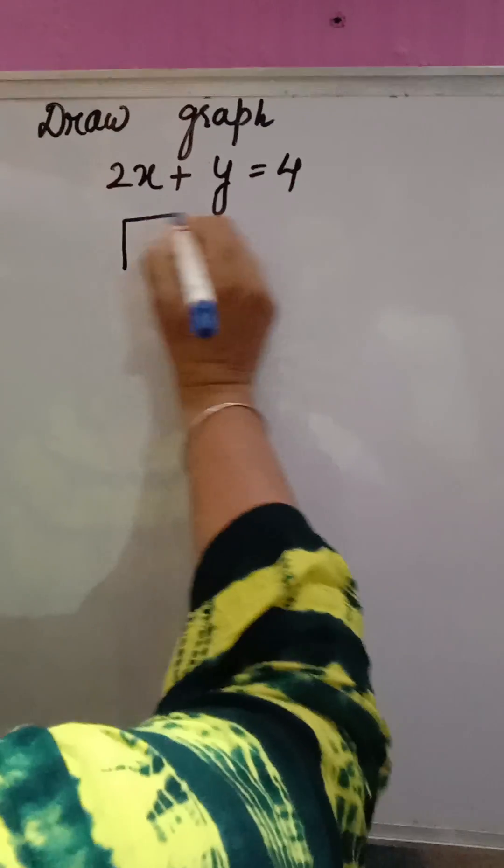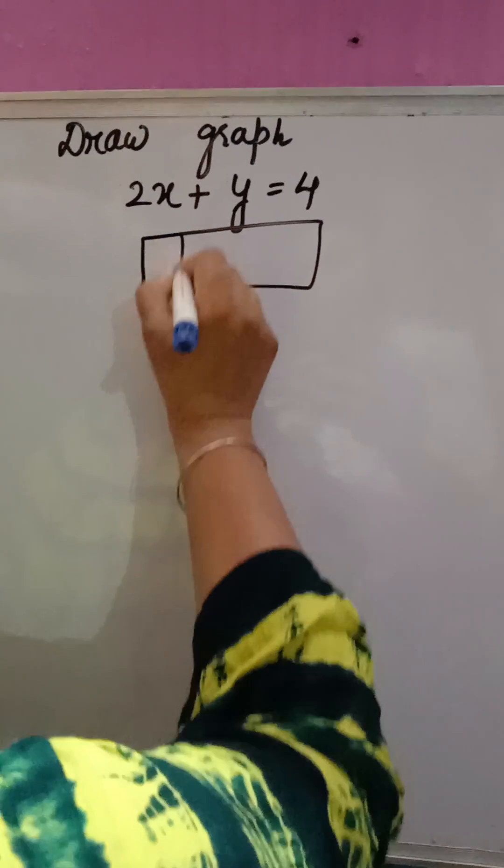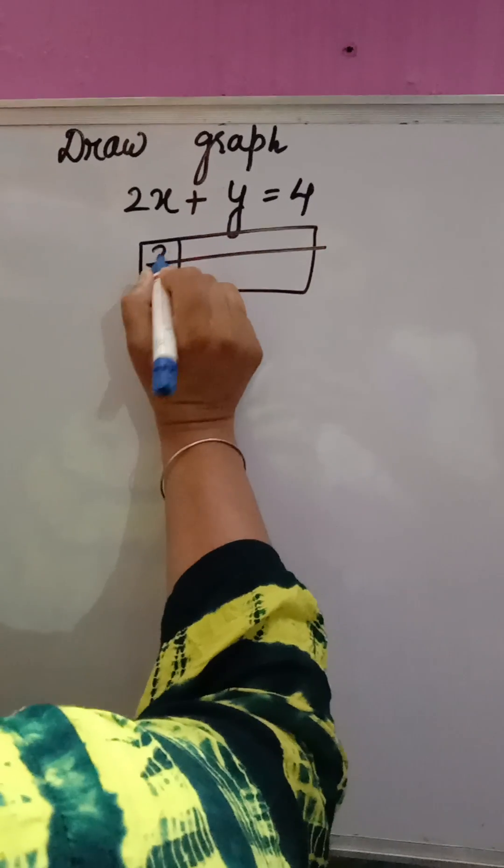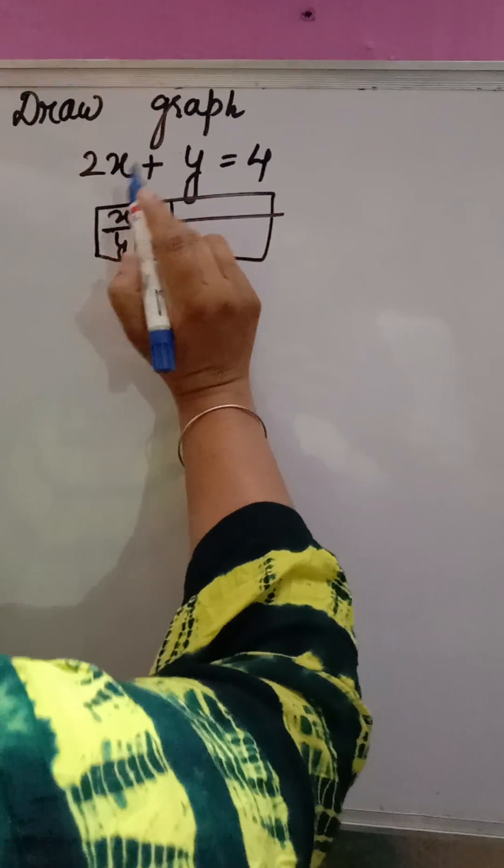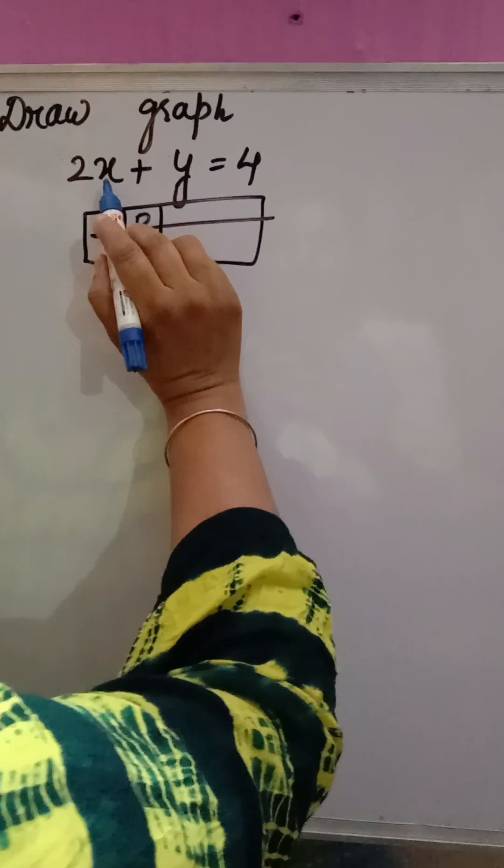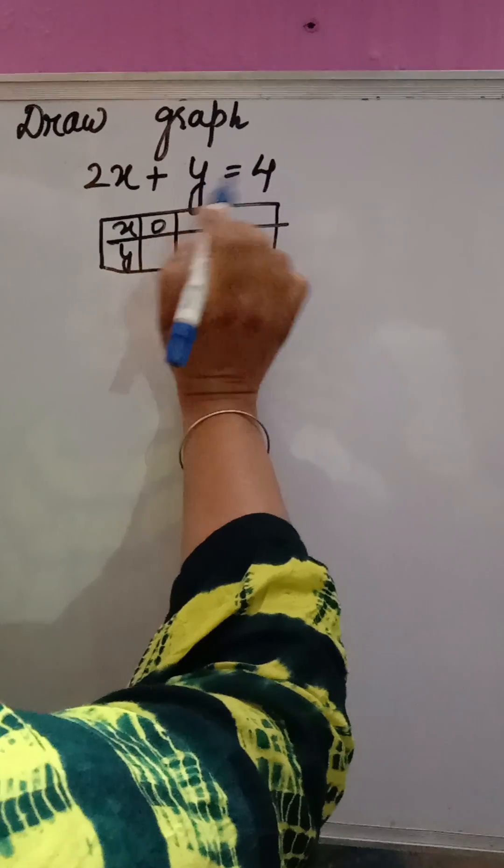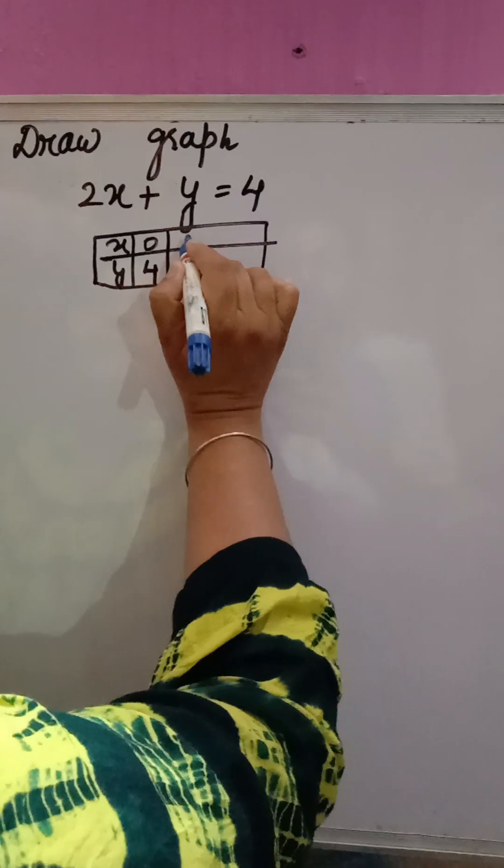So 2x plus y is equal to 4. To graph it, you have to make a table for x and y. Give different values of x and find value of y. If you are taking x is 0, 0 plus y is equal to 4, so y is equal to 4.